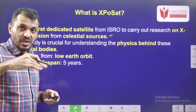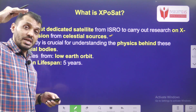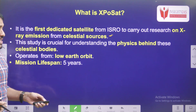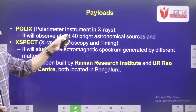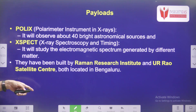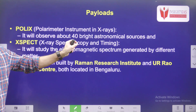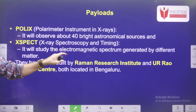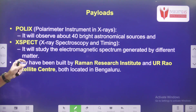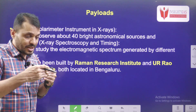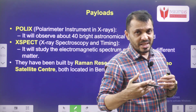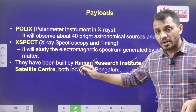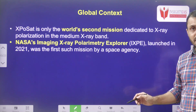Based on height, we have different types of orbits, with the highest being the geostationary or geosynchronous orbit. The mission lifespan is five years. The payloads are: POLIX — Polarimeter Instrument in X-rays — which will observe around 40 bright astronomical sources; and XSPECT, which will study the electromagnetic spectrum generated by various celestial matter. These two payloads were designed and built by the Raman Research Institute as well as the UR Rao Satellite Centre, both located in Bangalore.